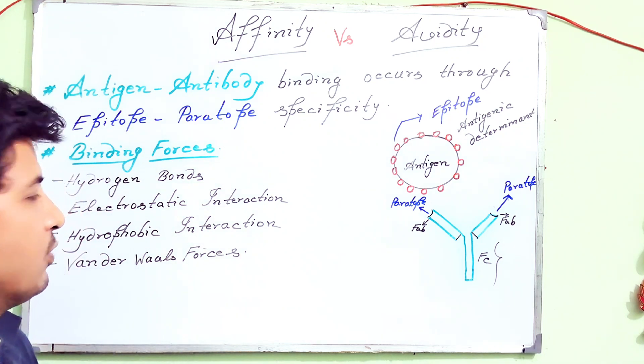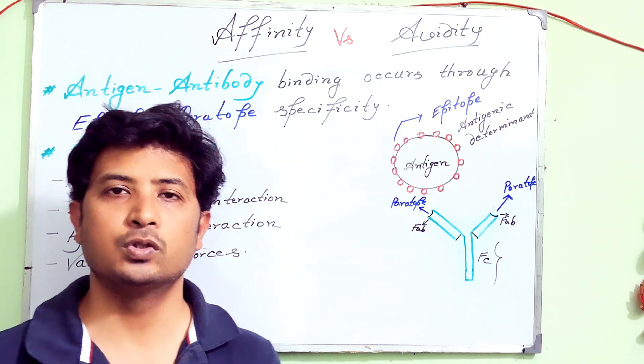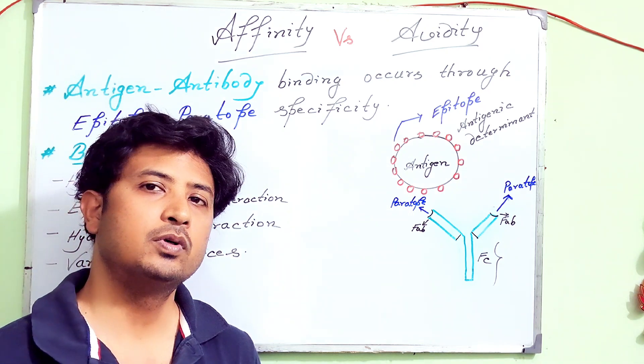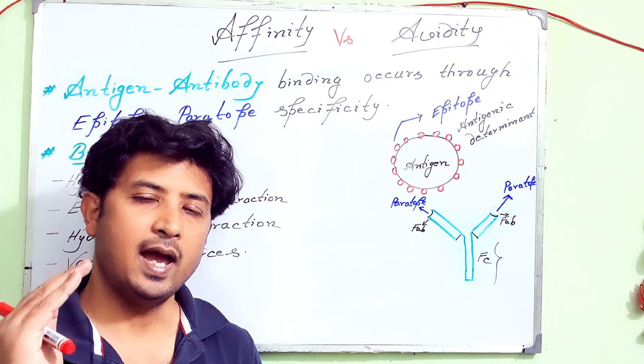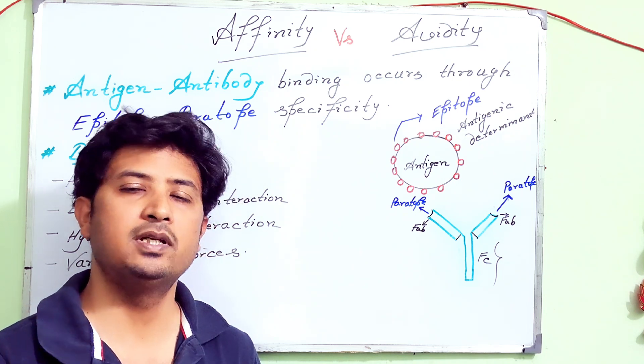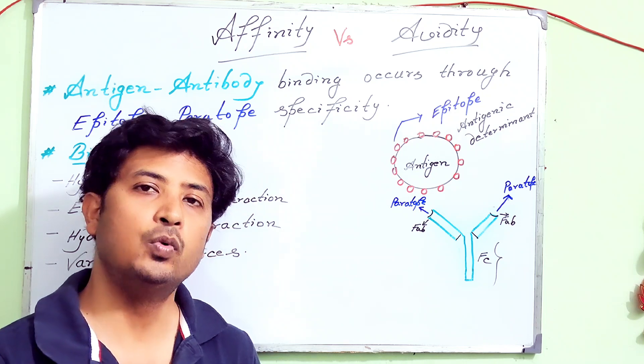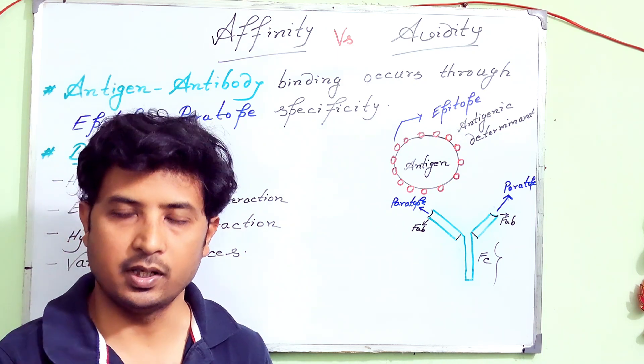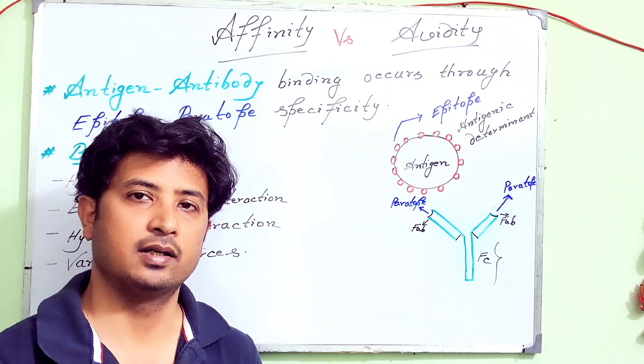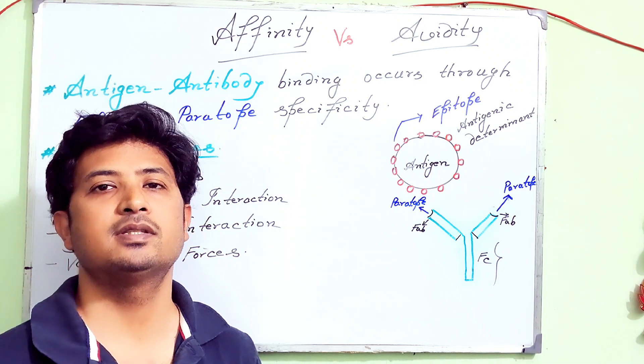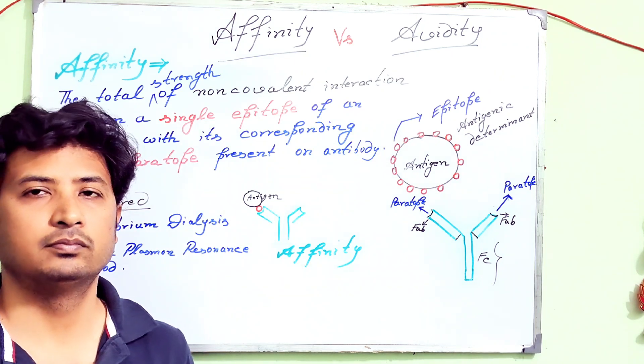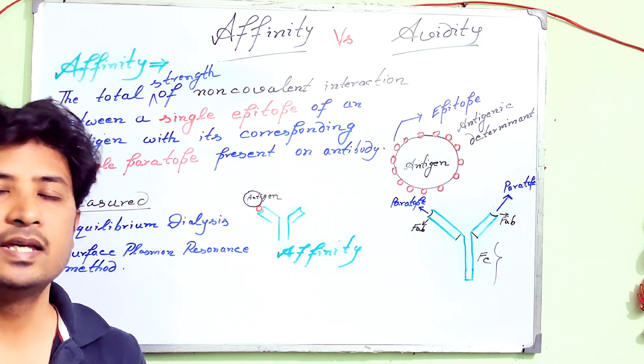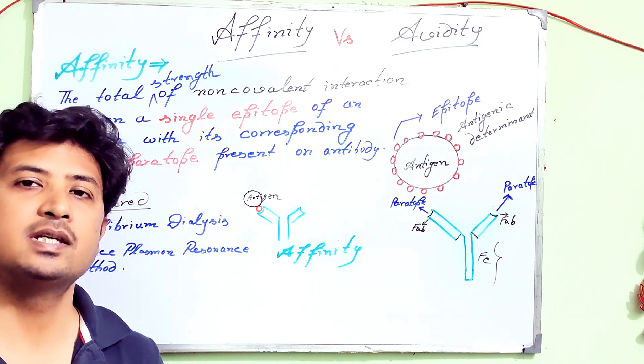Now I'm going to affinity. Affinity defines a single antigen binding capability or the bond formation capability with the epitope. So an antibody's parotope binding capability with the antigen's epitope—that is a single site of binding. I will draw and explain what is affinity and what is avidity. Affinity is the total strength of non-covalent interactions between a single epitope of an antigen and a single parotope of an antibody.